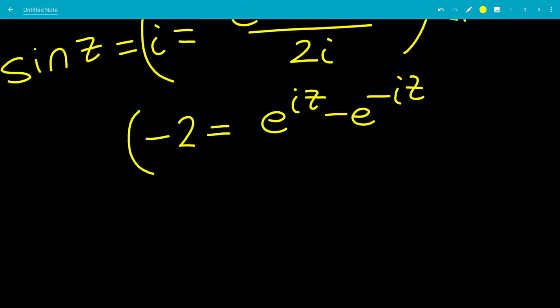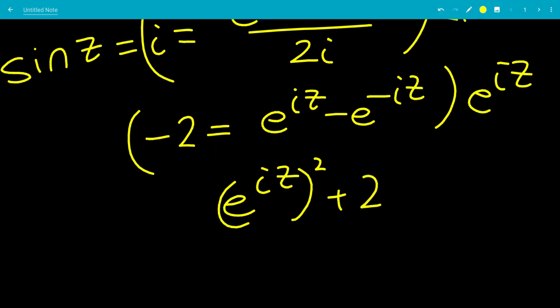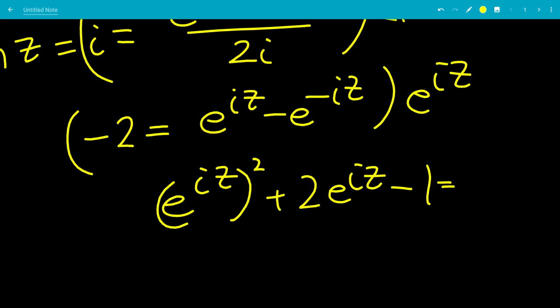Now we multiply both sides by e to the iz. We get e to the iz quantity squared. Moving the minus 2 over gives plus 2 times e to the iz, and e to the negative iz times e to the iz is 1, so minus 1 equals 0.